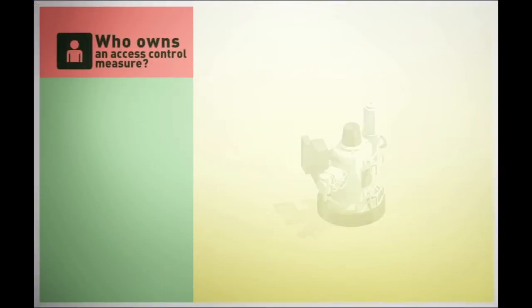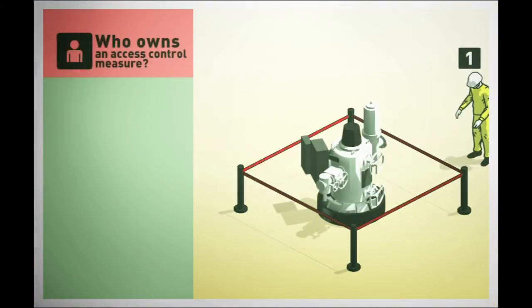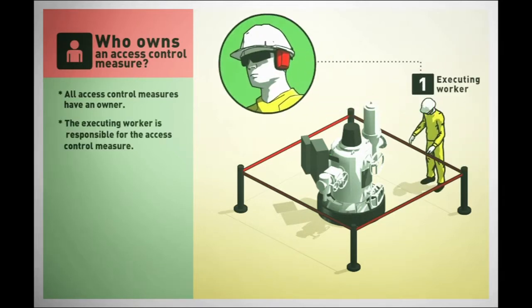Access control measures do not implement and remove themselves. All access control measures have an owner. The executing worker is responsible for establishing access control.